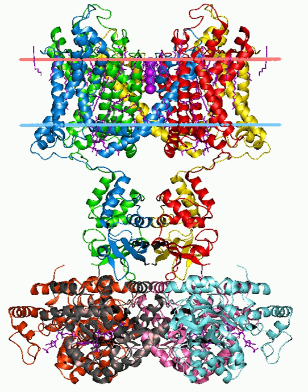For example, the calcium channels at an axon terminal differ from the typical calcium channels of a cell body. Even at axon terminals, calcium ion channel types can vary, as is the case with P-type calcium channels located at the neuromuscular junction.